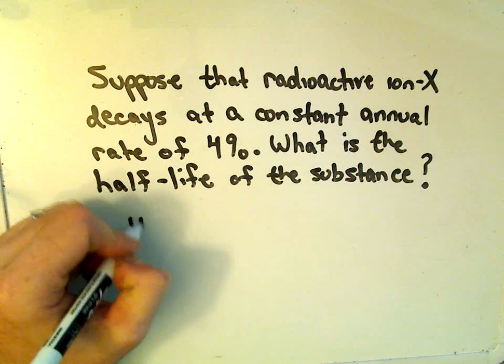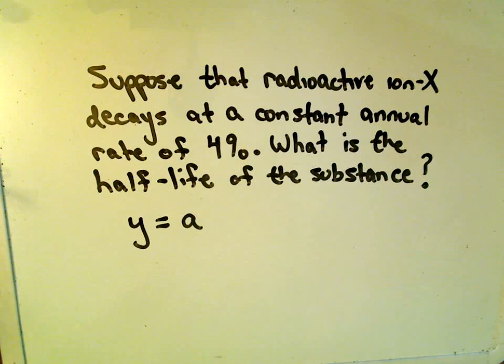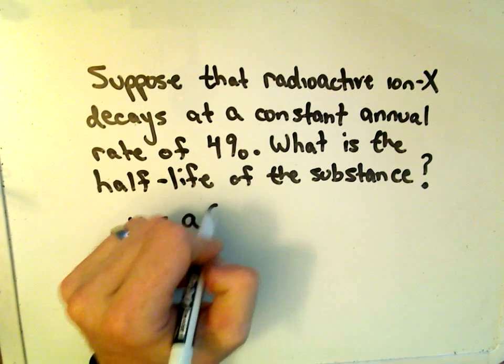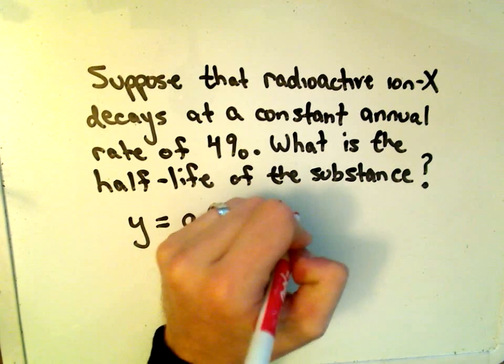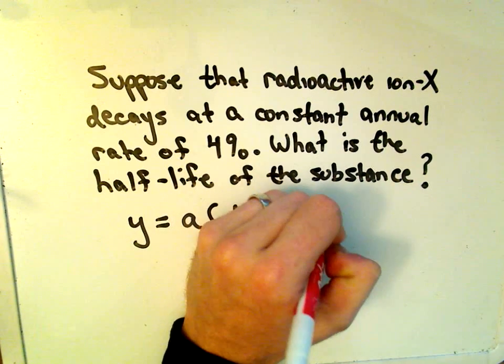So I know the general form of my equation. It's going to be the initial amount. In this case, we don't have an initial amount given, we'll just call it a. Now, the rate in this case is, it decays at a rate of 4%, so that means that our annual growth rate is actually negative 0.04.